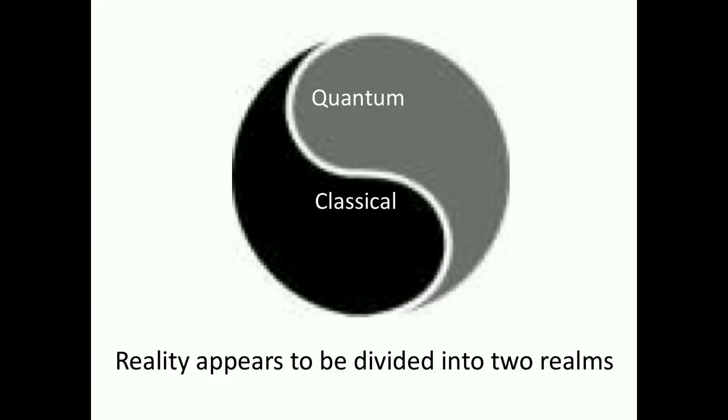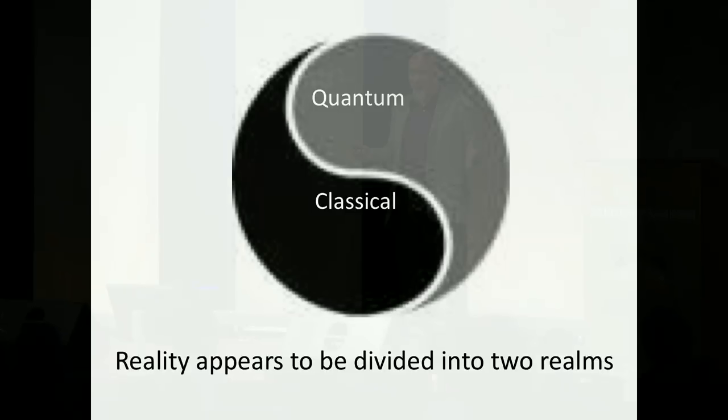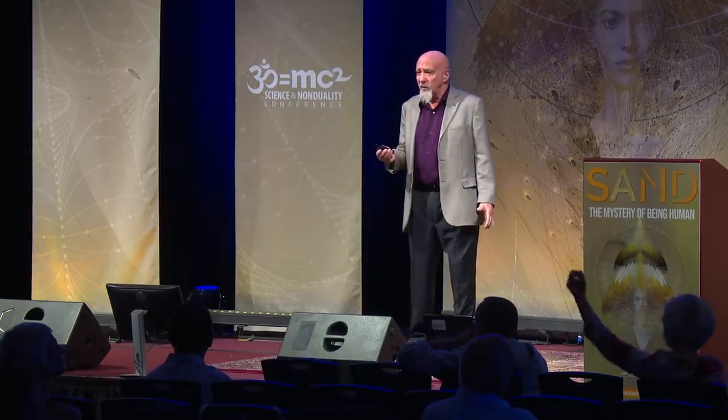Reality appears to be divided into two realms: the quantum and the classical. The classical world is what we exist in, everything's in definite places. However, the quantum world, things are different. It's governed by differing laws of physics.